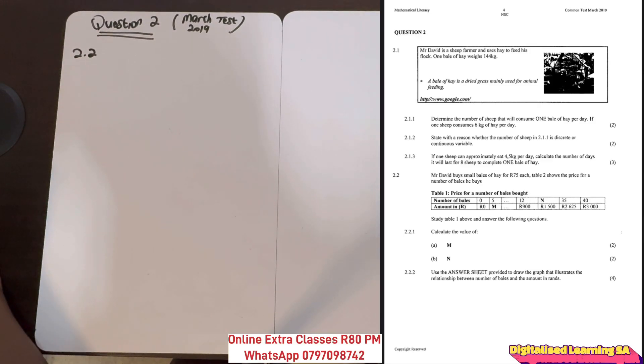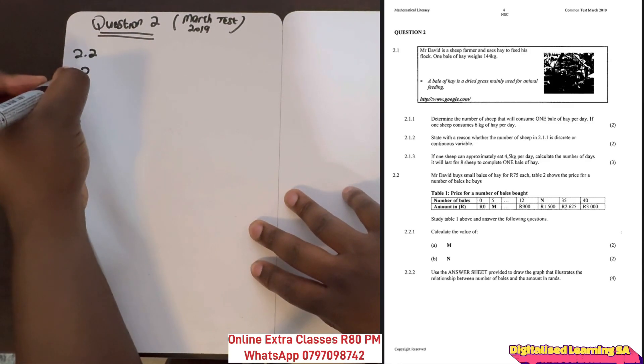We are given a scenario where Mr. David buys bales of hay for 75 francs each. Table 2 shows the price for a number of bales he buys. On Table 2 we are given the number of bales and the amount in rent.